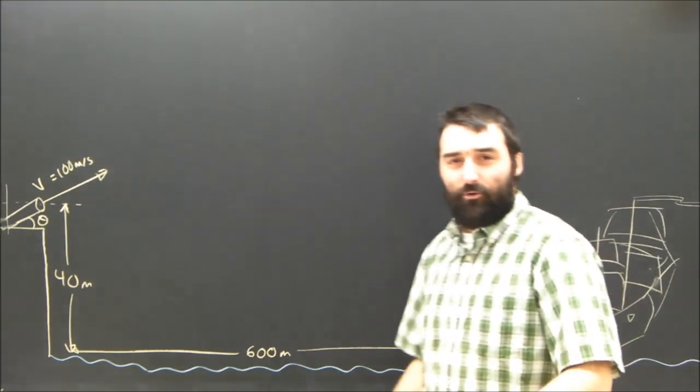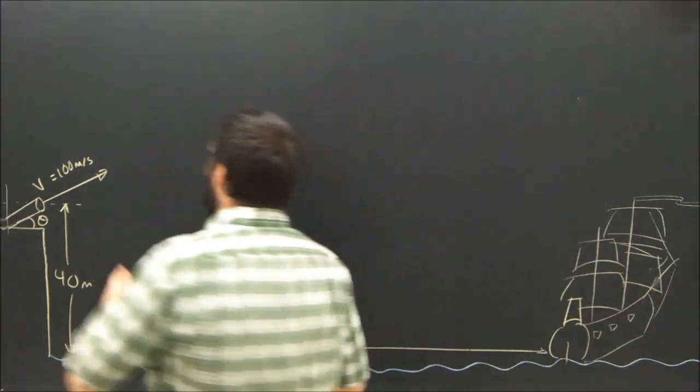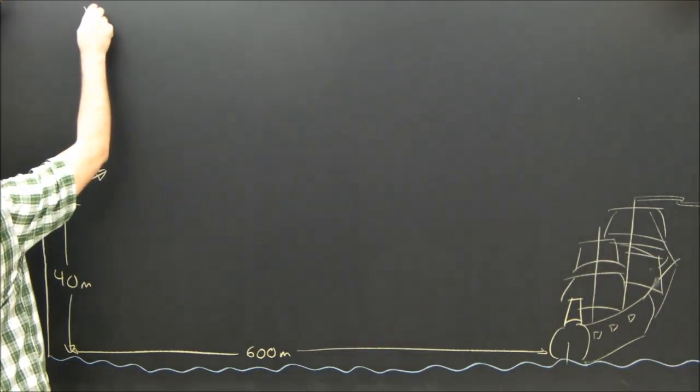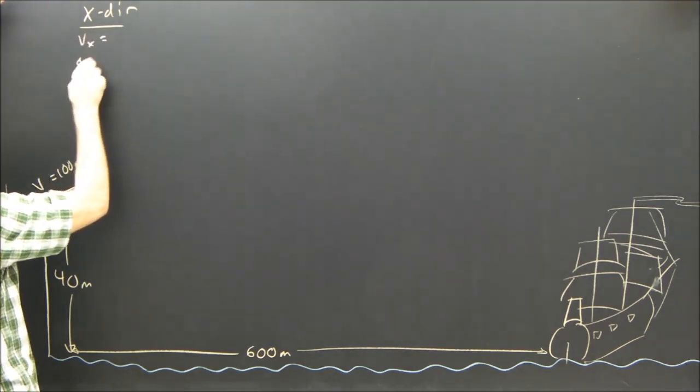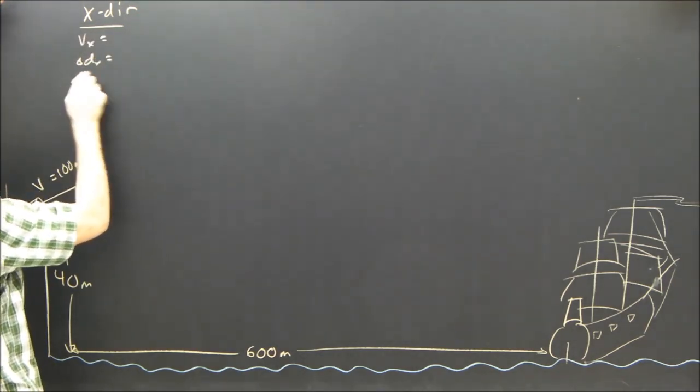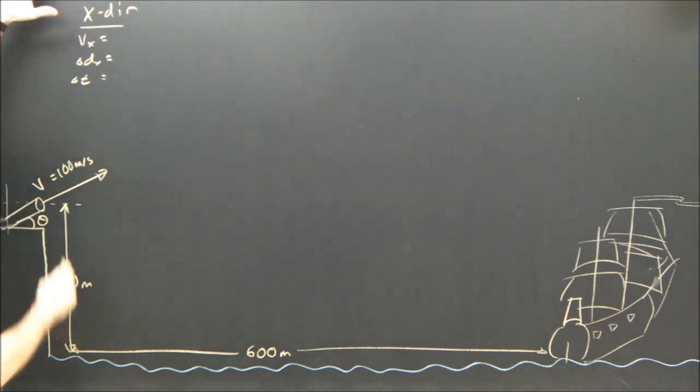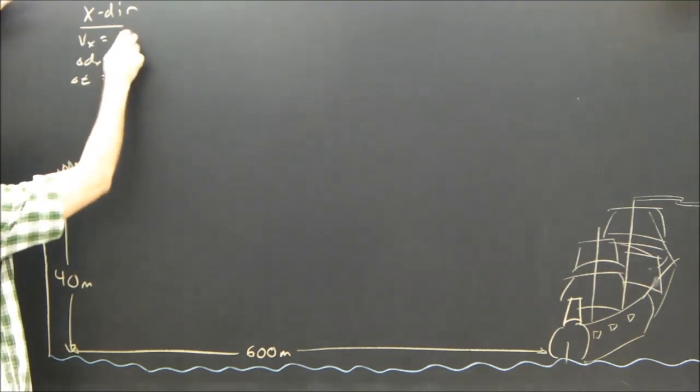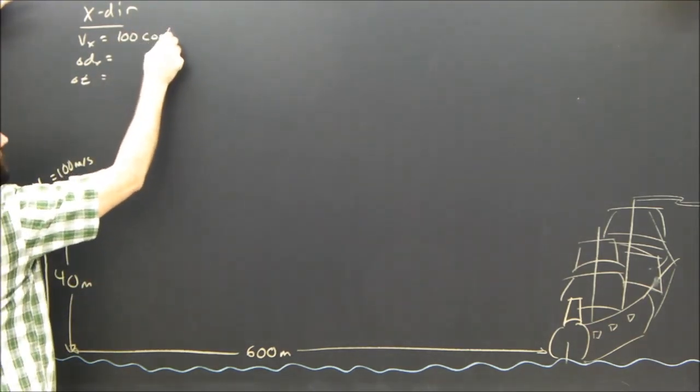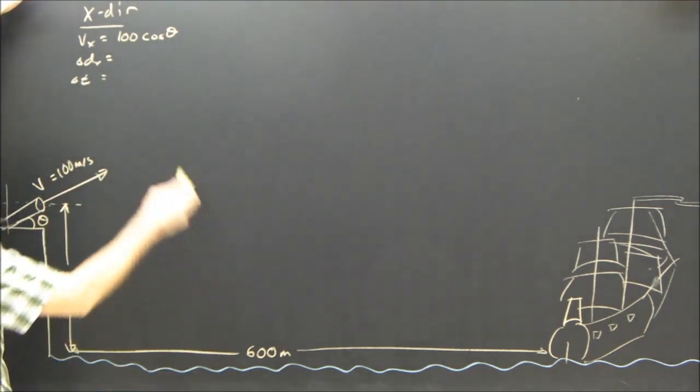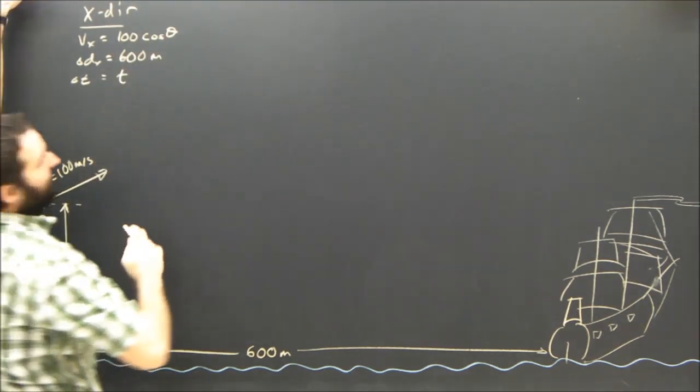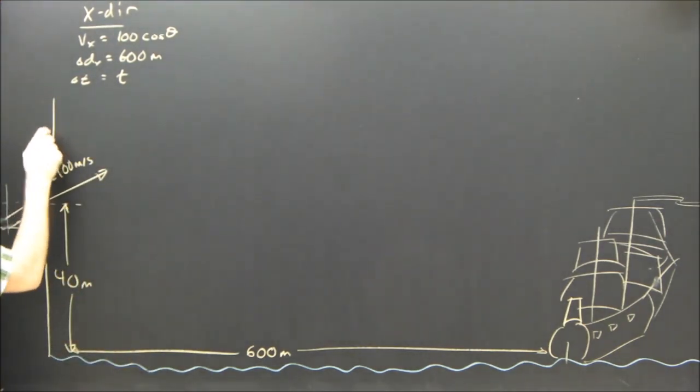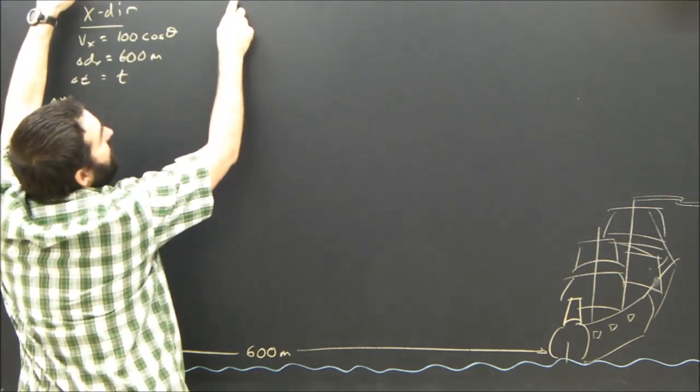Projectile motion problem? No problem. We just simply break everything into x and y. In the x direction, like always, we've got vx, dx, and time. What is the x component of the velocity? Well, that is 100 times the cosine of theta. What is the horizontal range? That is 600 meters, and I'll call the time t. I should, of course, define my directions. X is to the right, Y is positive.